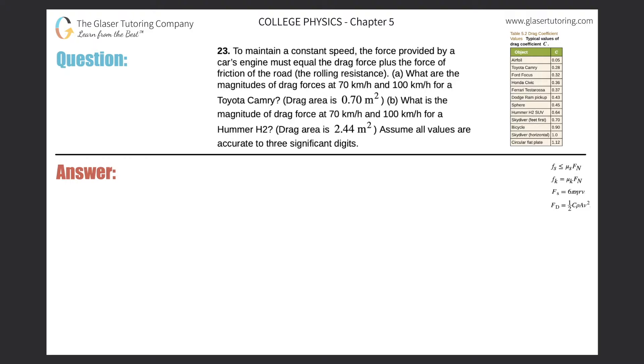Number 23: To maintain a constant speed, the force provided by a car's engine must equal the drag force plus the force of friction of the road, the rolling resistance. Letter A: What are the magnitudes of the drag forces at 70 kilometers per hour and 100 kilometers per hour for a Toyota Camry? Notice that the drag area is 0.7 meters squared.